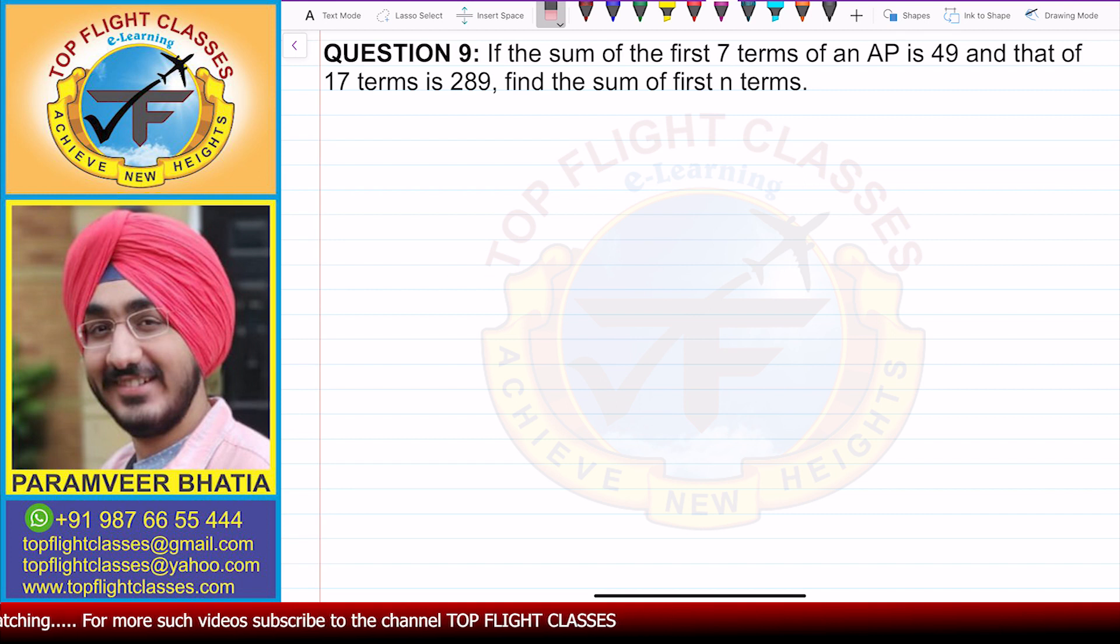So what is the question? Sum of first 7 terms, S7, is equal to 49 and that of the 17 terms, S17, is equal to 289.